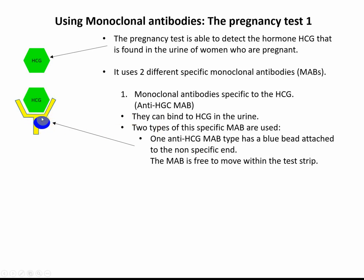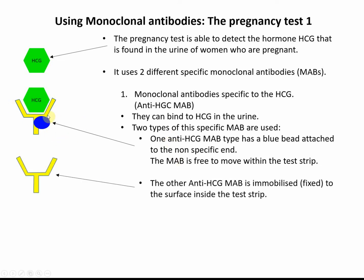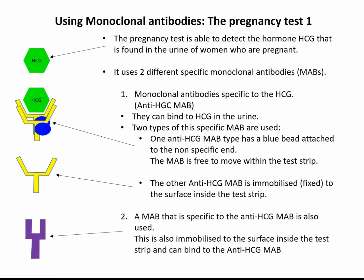One of the HCG-specific monoclonal antibodies has a little blue bead attached to the non-specific end of the antibody — remember, that end can have things bound to it. This antibody is specific to HCG, so you can see HCG fits into the recognition site. We also have more of the same monoclonal antibody but without a bead, and these get stuck to the surface of the pregnancy test strip — we call that being immobilised. We also need another type of monoclonal antibody, which is an antibody against this antibody — it specifically binds to the HCG monoclonal antibody, so it's an anti-antibody, which is a bit of a mouthful.